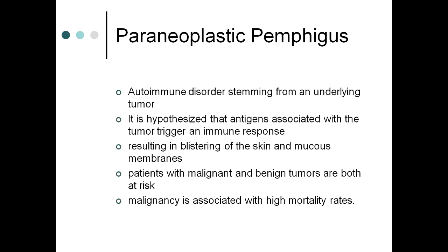Paraneoplastic pemphigus is less common than pemphigus vulgaris and foliaceous. It is an autoimmune disorder stemming from an underlying tumor — antigens associated with the tumor trigger an immune response causing blistering of skin and mucous membranes. Both malignant and benign tumors are associated (e.g., thymoma and Castleman tumors), and malignancy is associated with high mortality.